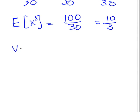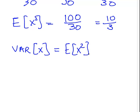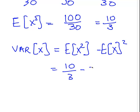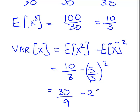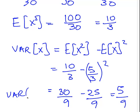So the variance of x is E(X²) minus [E(X)]² = 10/3 minus (5/3)² = 10/3 minus 25/9. Converting: 30/9 minus 25/9 = 5/9. So the variance of x is 5/9.